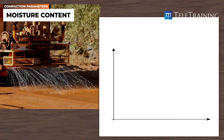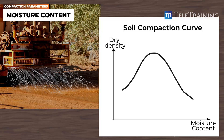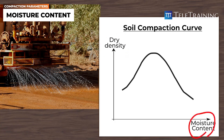Refer to this chart to gain a better understanding of the ideal moisture levels for soil compaction. This chart indicates the soil's dry density based on its moisture content, and is also referred to as the soil compaction curve. Dry density is shown on the vertical axis and moisture content on the horizontal axis.